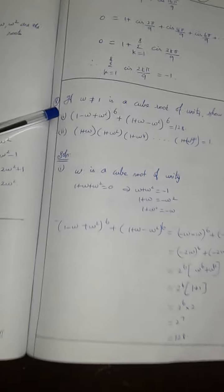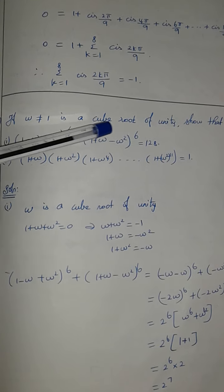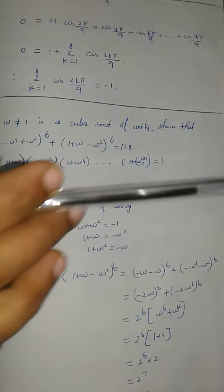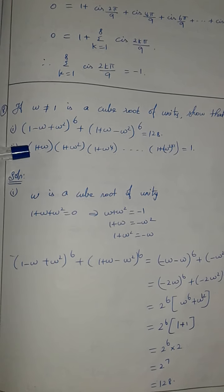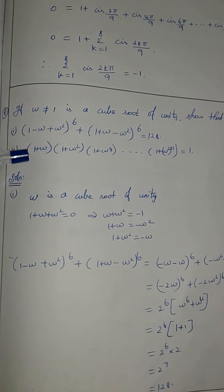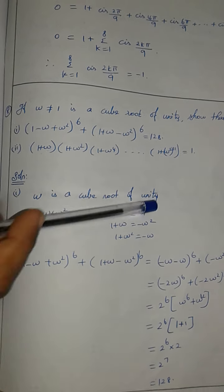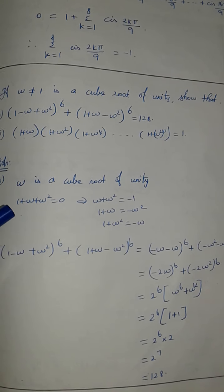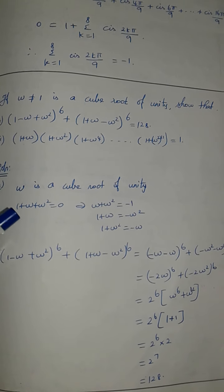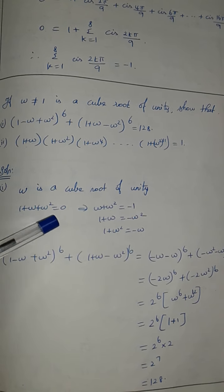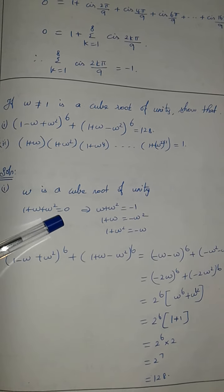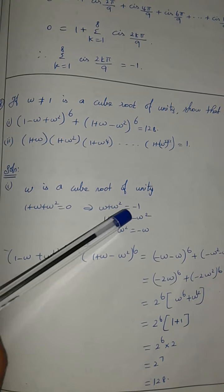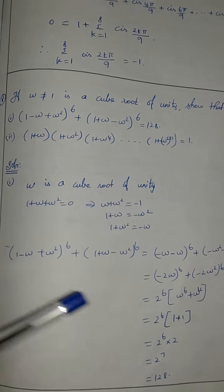This is Question 8. If omega is a cube root of unity, that is, omega₀ equal to 1. The roots are 1, omega, and omega squared. Sum of the roots is equal to 0, so omega plus omega squared is equal to minus 1.